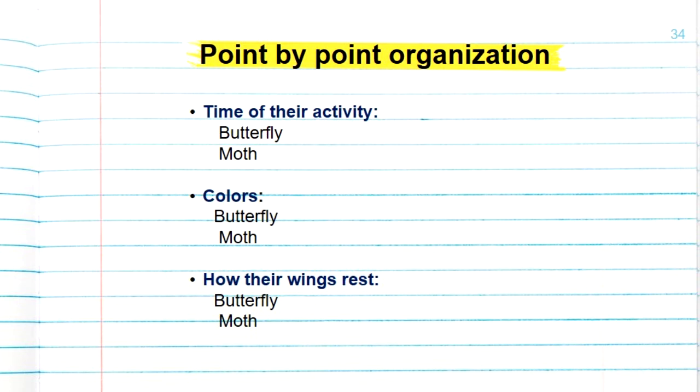For example, if I want to write a body paragraph about butterfly and moth, I'm going to use the following structure. In the first body paragraph I will talk about the aspect of time of their activity. First in this paragraph I will discuss how butterflies are diurnal creatures and they are active during the day, and then I will move to discuss in detail how moths are nocturnal creatures with providing examples and details and information related to these two ideas.